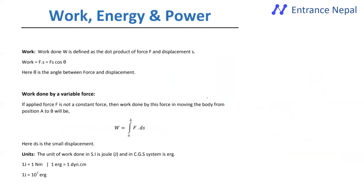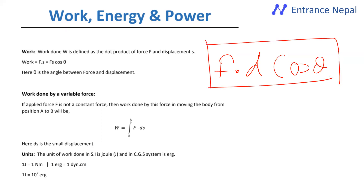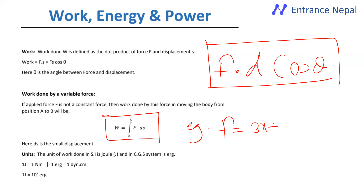Next is work, energy, and power. Work is done when a force causes a displacement of an object. Work equals the component of force in the direction of displacement times the displacement (W = F·d·cos θ). For a variable force, integration is used.